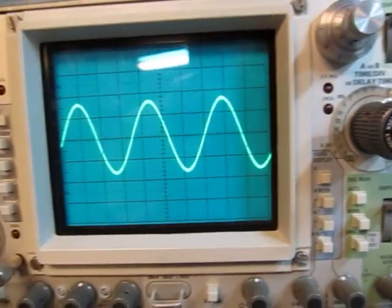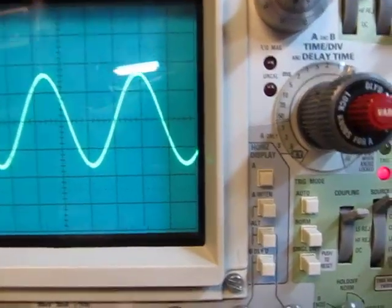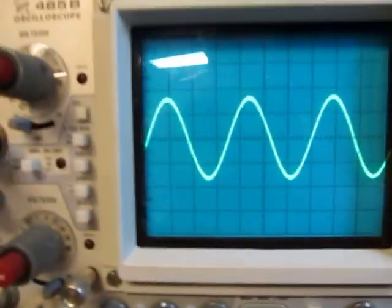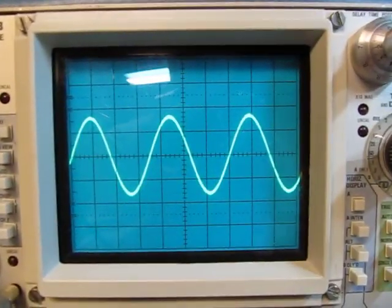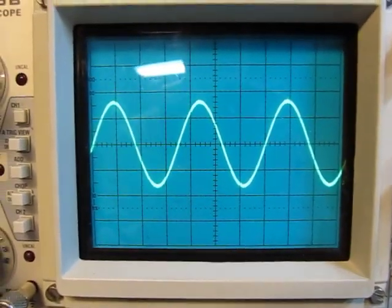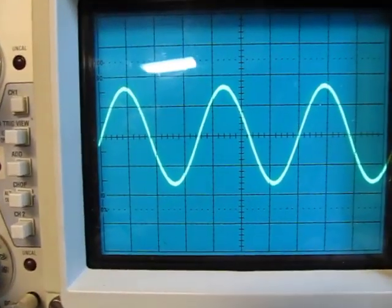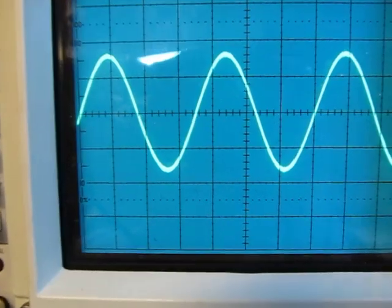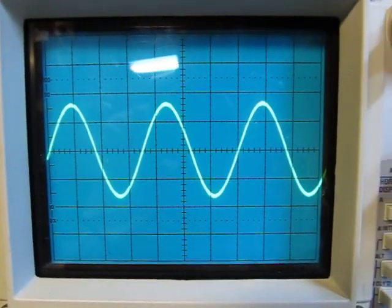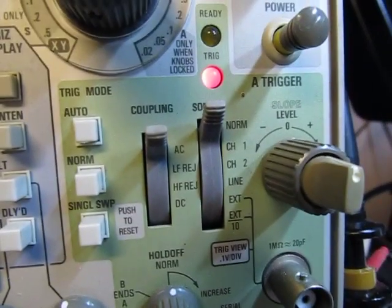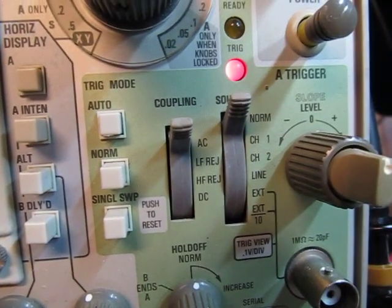You may remember that on an analog scope, what trigger means, in a sense, is when am I going to kick off the sweep and have it go across the screen? And you want that to be synchronized to your signal so you get a nice stable display like we have here. And you normally set up your various trigger controls to make that happen.